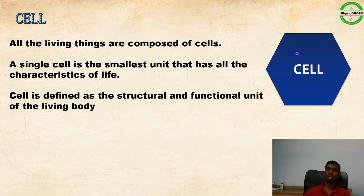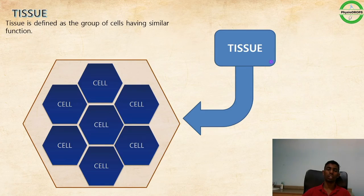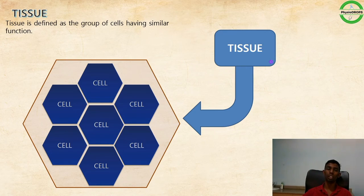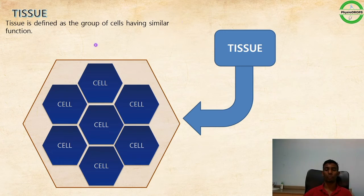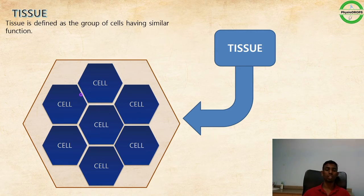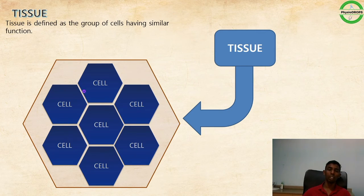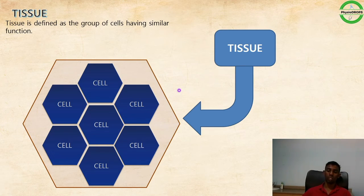From a single cell, it goes to the next level: tissue. A number of cells with a similar function work together to form tissue. So a group of cells having a similar function is called a tissue.